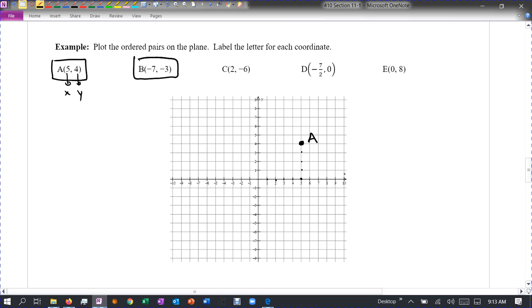Okay, let's go for this one, negative seven, negative three. So we go to the left, one, two, three, four, five, six, seven. Then we go down, one, two, three. And we draw a point here, and that's our B.